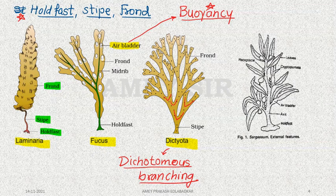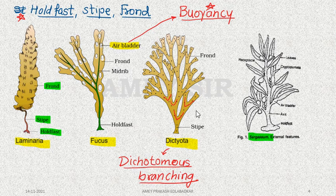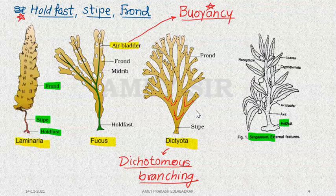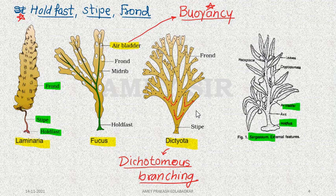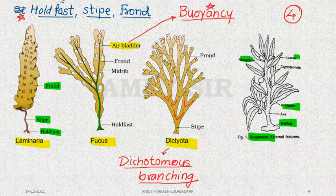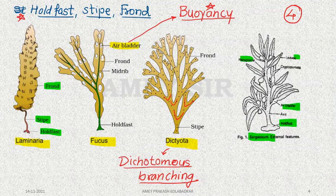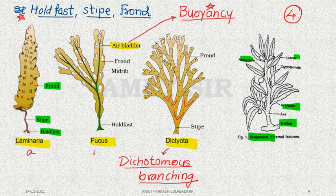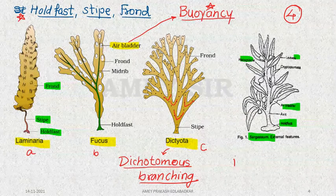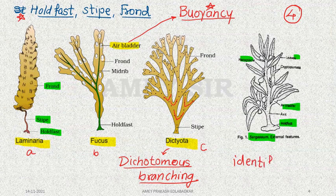If we move further and discuss an important Brown Algae, that is Sargassum. In Sargassum, we get holdfast, air bladder, frond, and receptacle — all these parts are present. These 4 algae are the most important examples from Brown Algae. Three are taken from the NCERT diagram, because exam questions will be based on these. The examiner will label Laminaria as A, Fucus as B, and Dictyota as C, and ask you to identify the given figure.